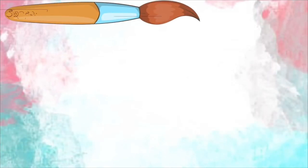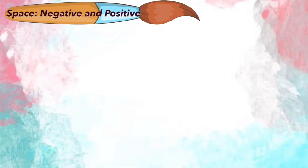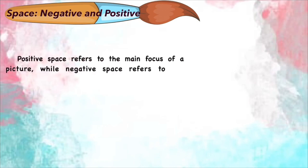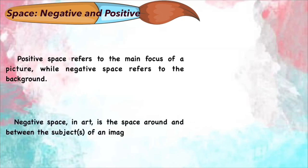Negative and positive space. Positive space refers to the main focus of the picture, while negative space refers to the background. Negative space in art is the space around and between the subjects of an image.